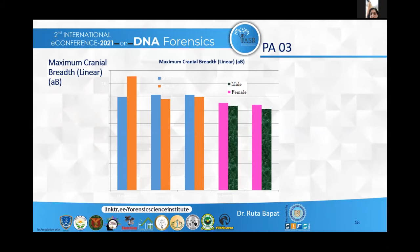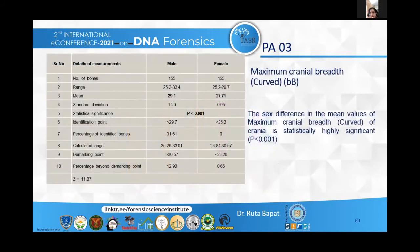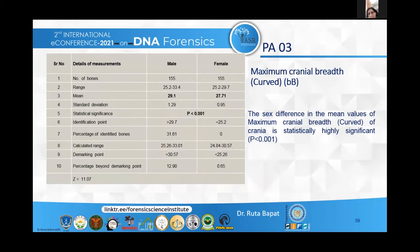This table shows the maximum cranial breadth linear compared with results from other scientists. Similarly, for the maximum cranial breadth curve, the same observation table was prepared with the number of bones, range, mean, standard deviation, identification point, percentage of identified bones, calculated range, and demarking points. Again, the sex difference in mean values of maximum cranial breadth curve is statistically highly significant.